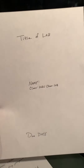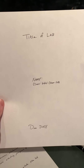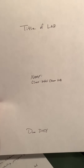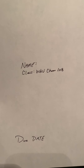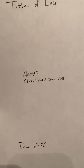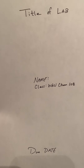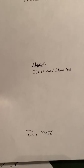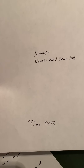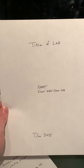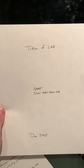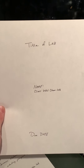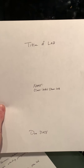We've got the title of the lab up at the top. You come down about midways, you're going to put your name and your class. The class will be WKU Chemistry 108. The name would be your name. You don't actually have to write in 'name' and 'class,' but you would put those in. Down at the bottom will always be your due date — that's the date in which the lab is actually turned in. And that is what a title page looks like.